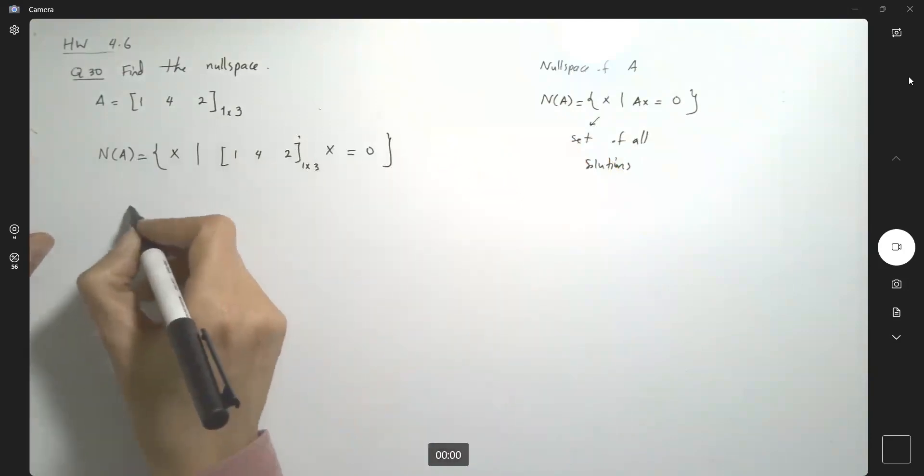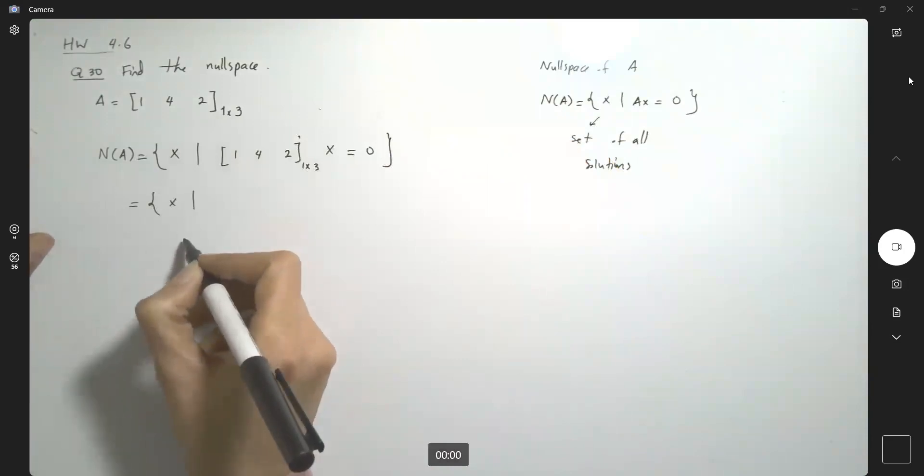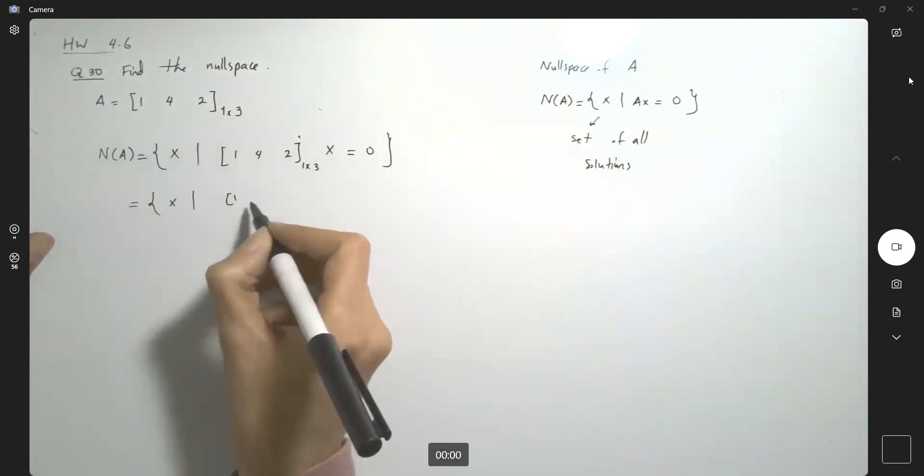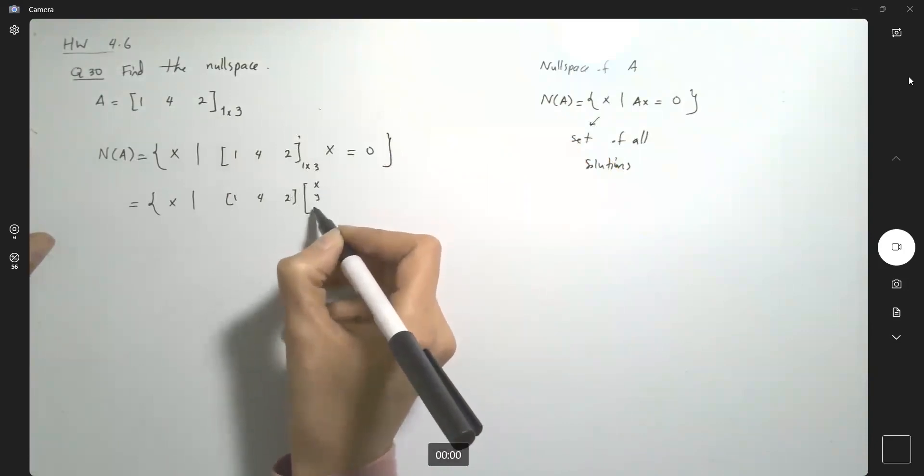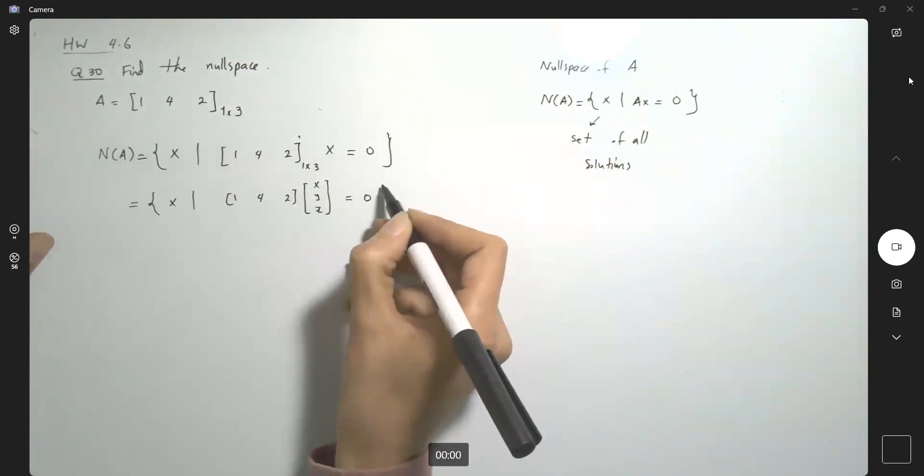So basically you're finding the set of all vector x such that [1, 4, 2] multiplied by, for example, (x, y, z) is equal to zero.